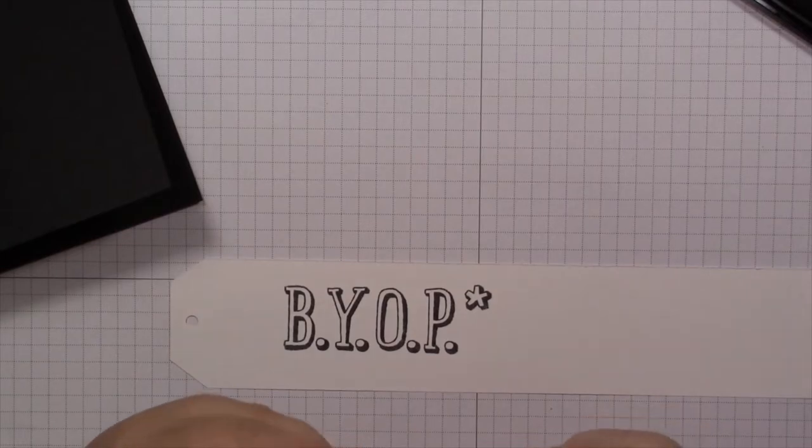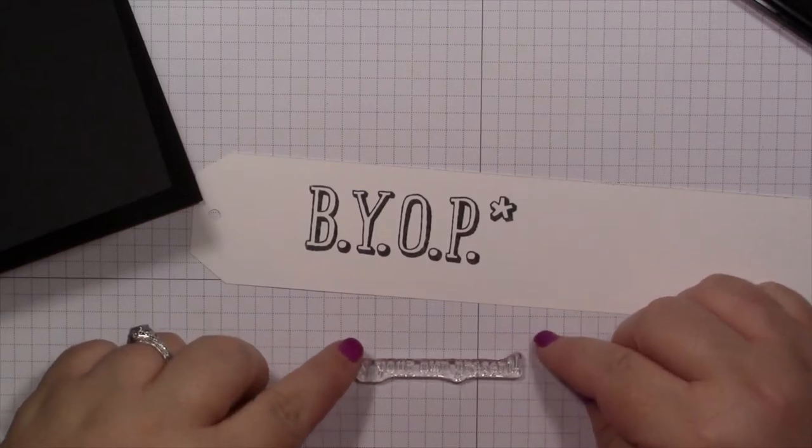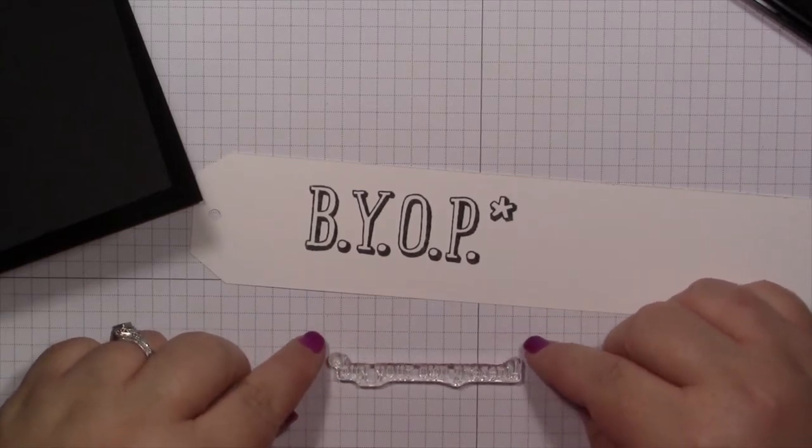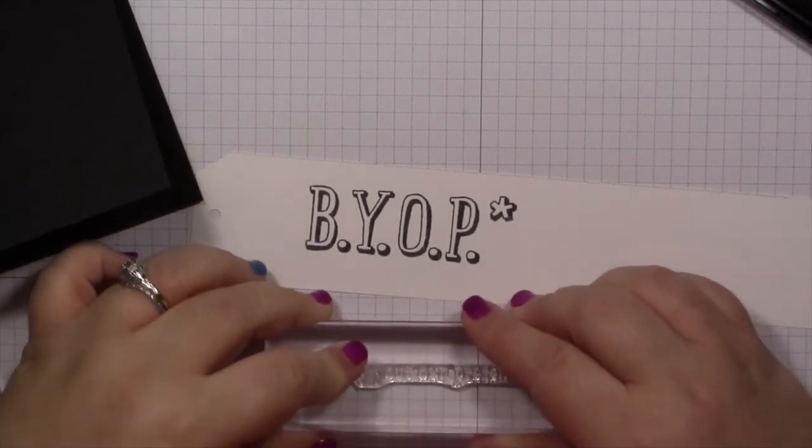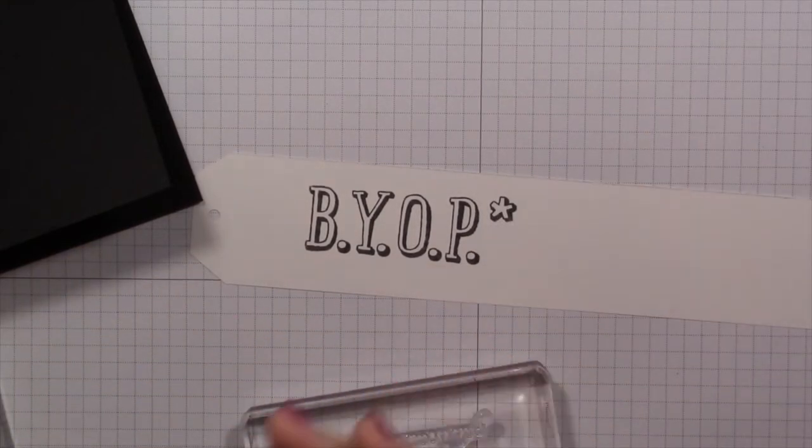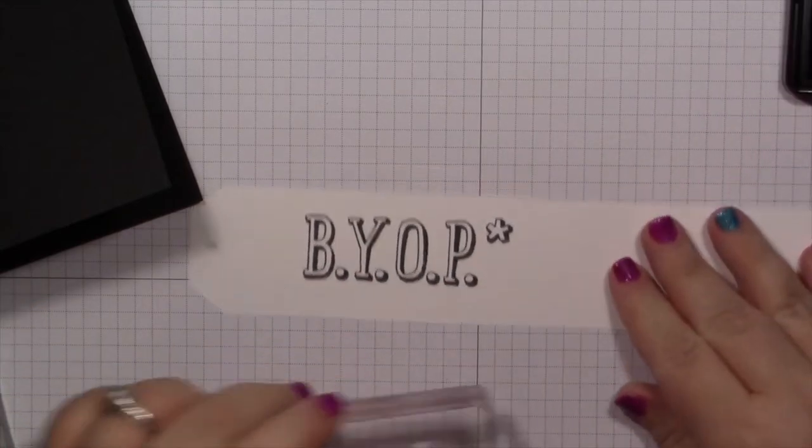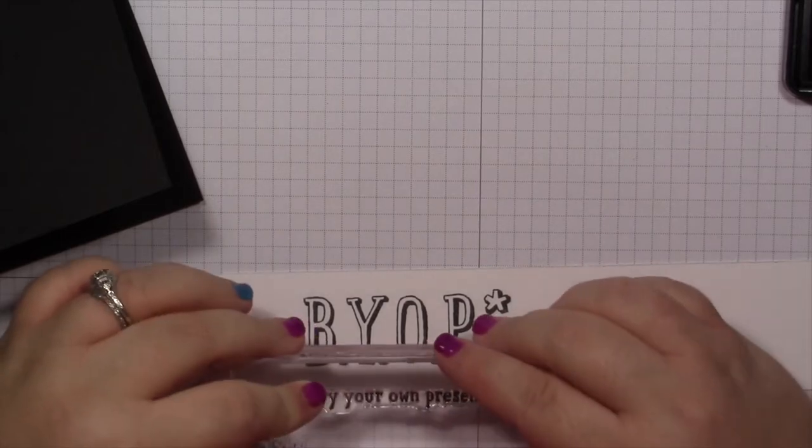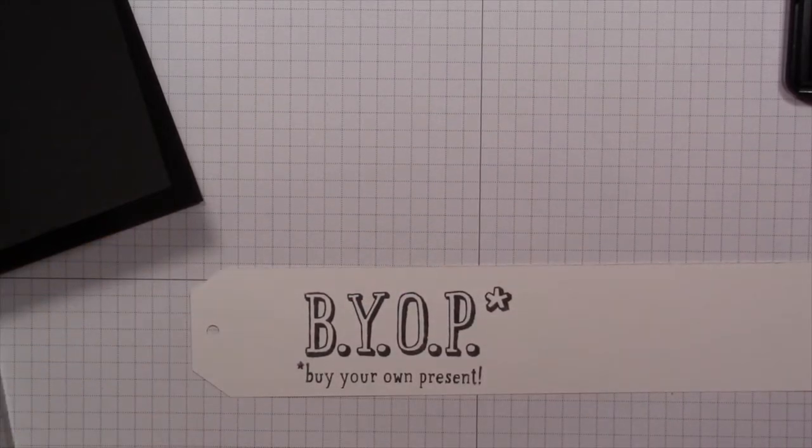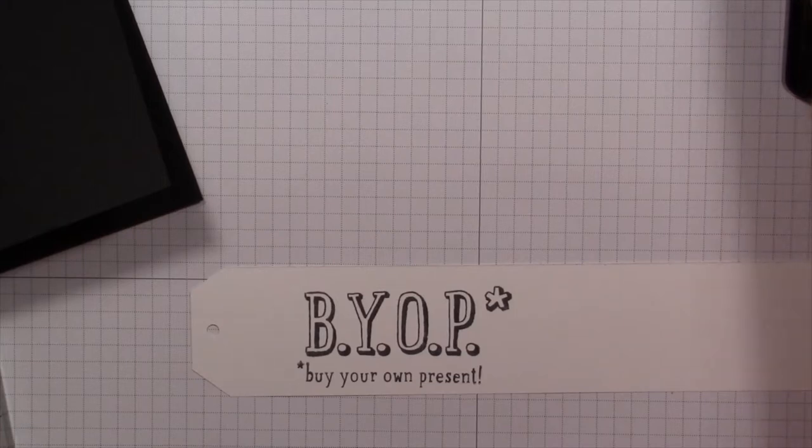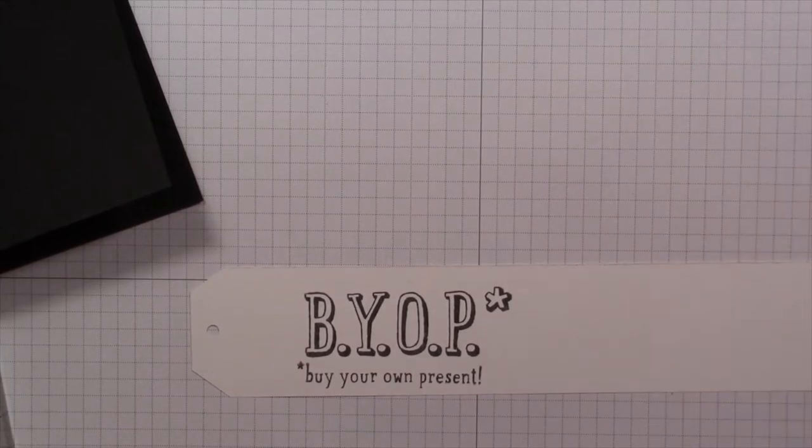Let's do the 'buy your own present.' I'm just lining this up using my grid paper to line this up so it's straight before I pick it up with my block. Ta-da! That doesn't look half bad. It's not perfect, but I really am okay with it.